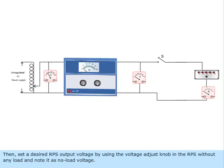Then, set a desired RPS output voltage by using the voltage adjust knob in the RPS without any load and note it as no load voltage.